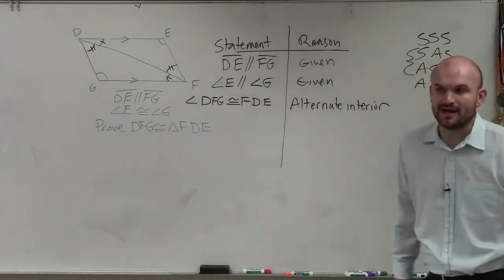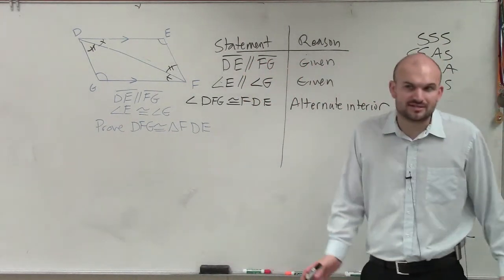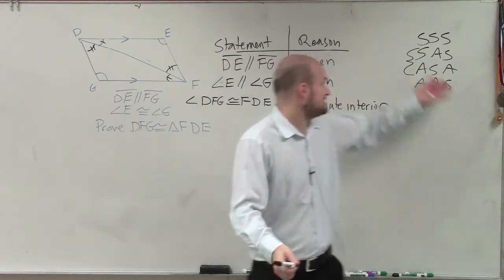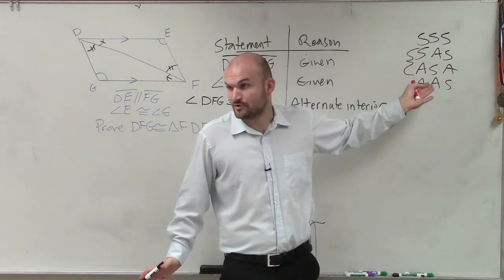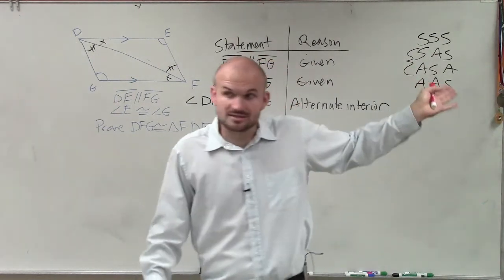Now, you could write it for both of those angles, but we don't have to. Because right now, and the other thing is, right now we have angle, angle, angle. But do you guys see angle, angle, angle up there as a way to prove that two triangles are congruent? No, angle, angle, angle does not work.